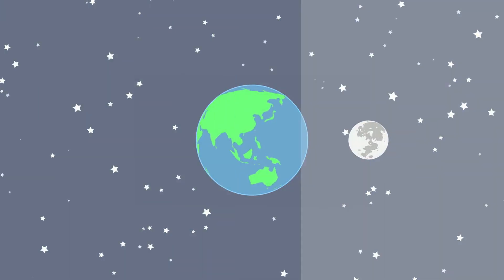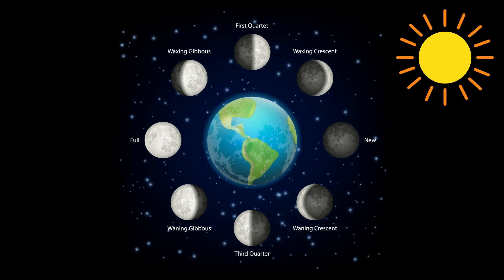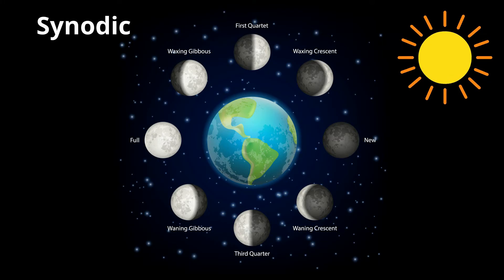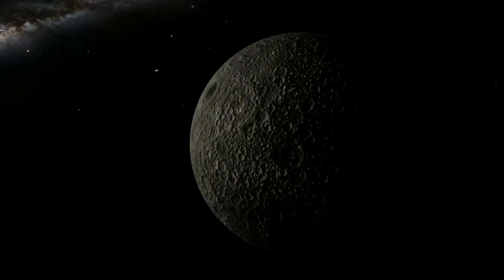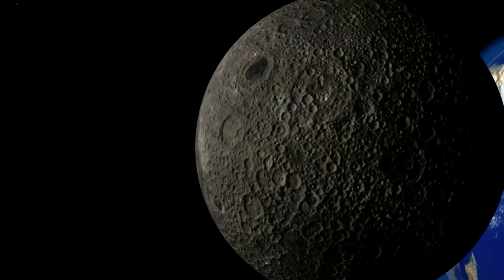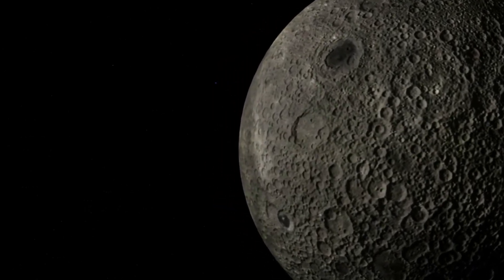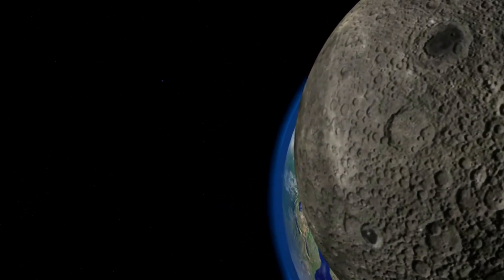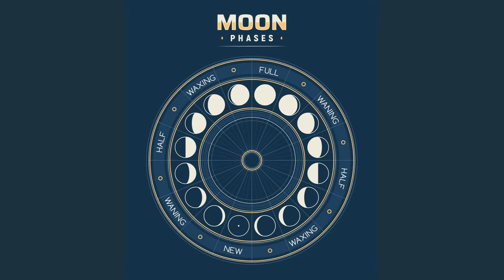Measuring the motion of the moon around the Earth relative to the sun leads us to what is called the synodic period. The synodic period is the time required for a body within the solar system to return to approximately the same position relative to the sun as seen by someone on Earth. Think full moon to full moon — the moon takes roughly 29.5 days to go from full moon to full moon, or new moon to new moon.